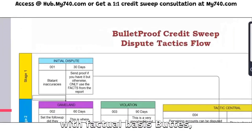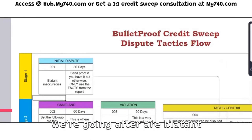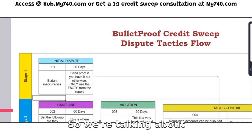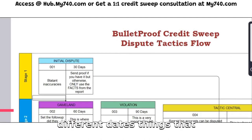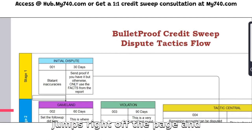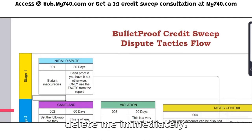With factual basis disputes, we're going after blatant inaccuracies — different balances, different dates, things that jump right off the page and say 'delete me immediately.'